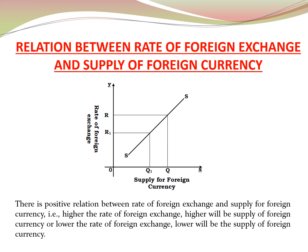But why is the supply curve sloping upwards from left to right? When the rate of foreign exchange falls, the domestic goods become costlier for foreign countries — that is, foreign countries can purchase less domestic goods. This leads to a fall in the export of domestic goods, and therefore the supply of foreign currency falls. Or, when the rate of foreign exchange falls, tourism to the domestic country becomes expensive, so the supply of foreign currency falls.